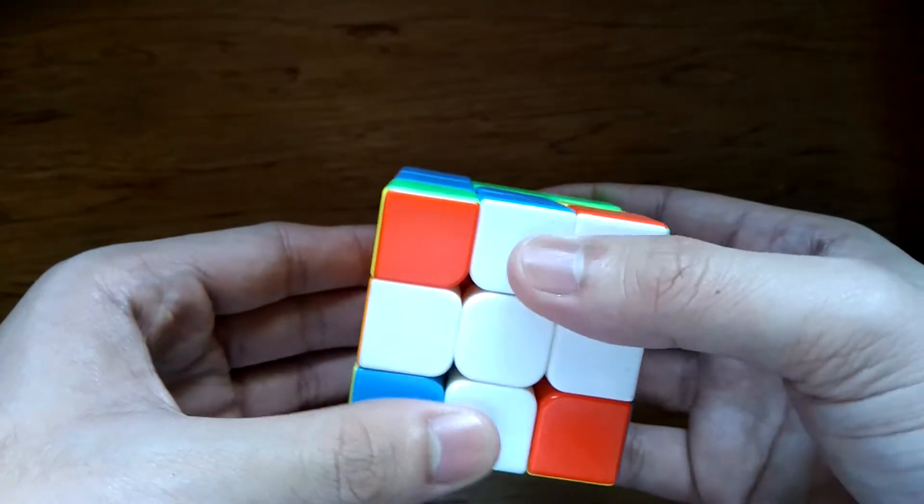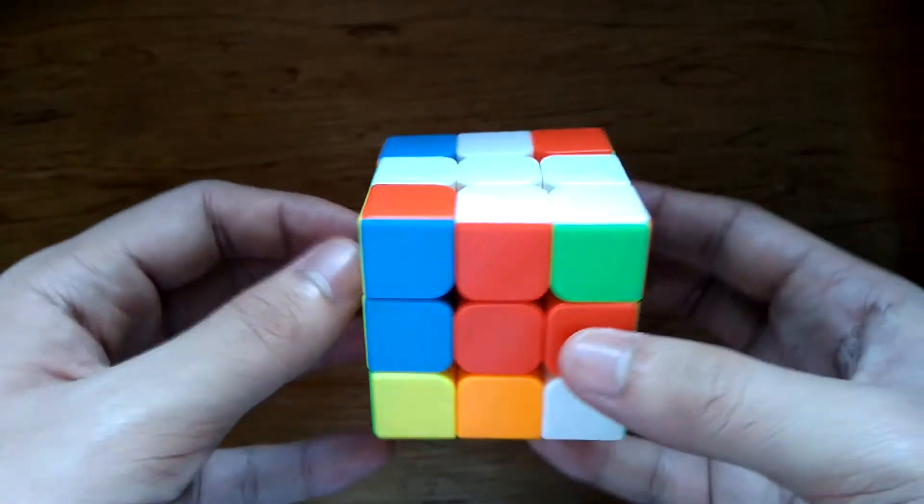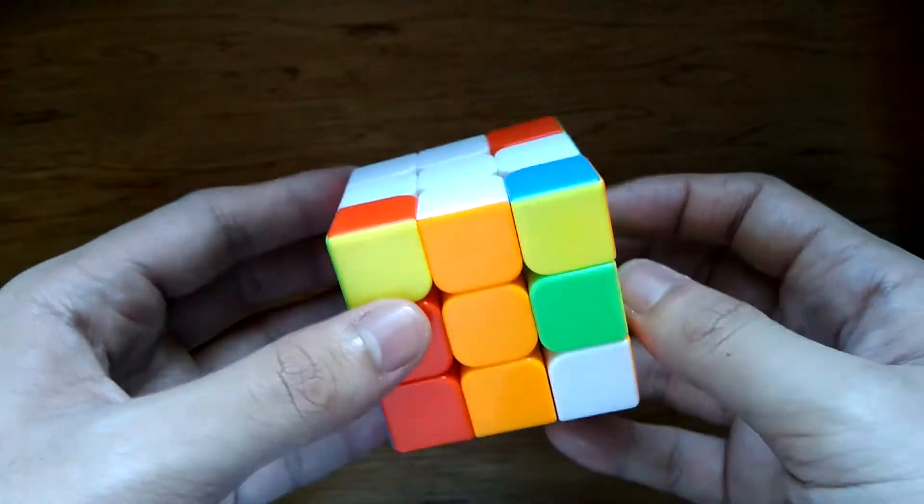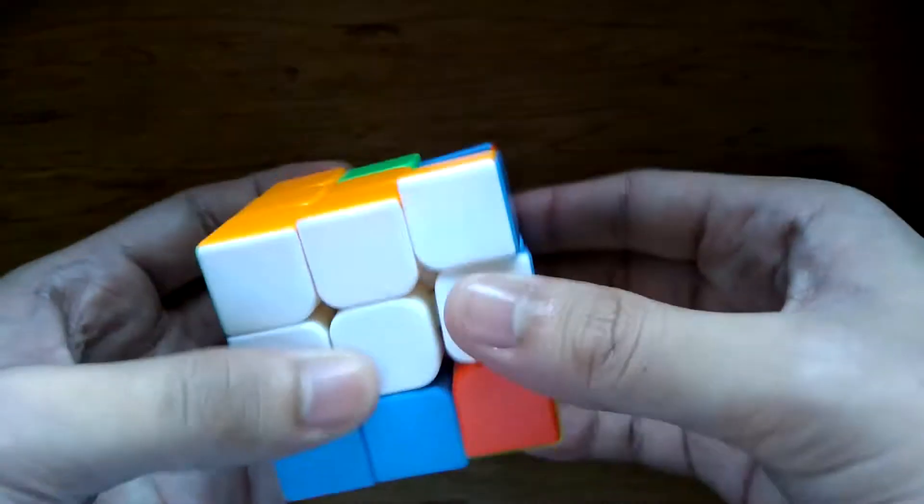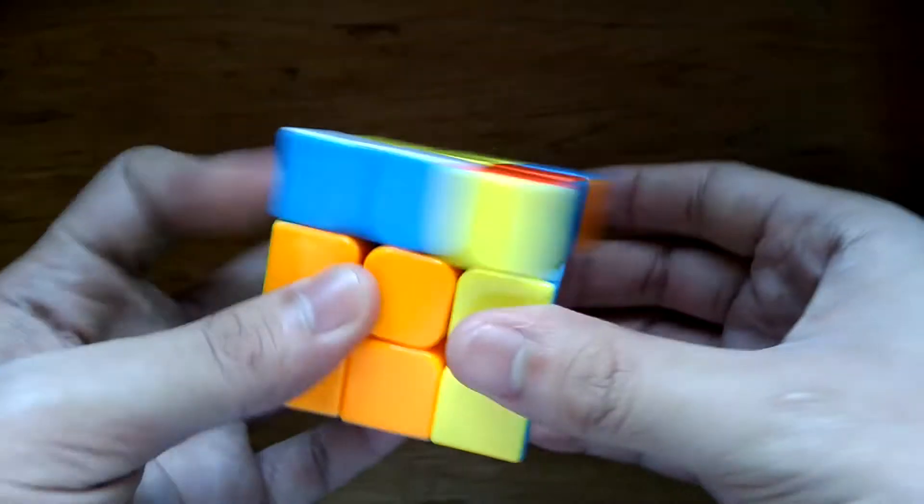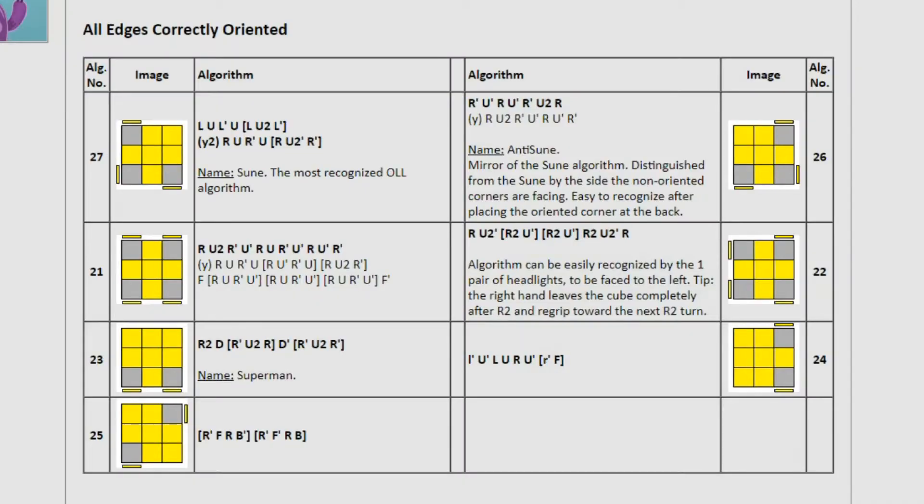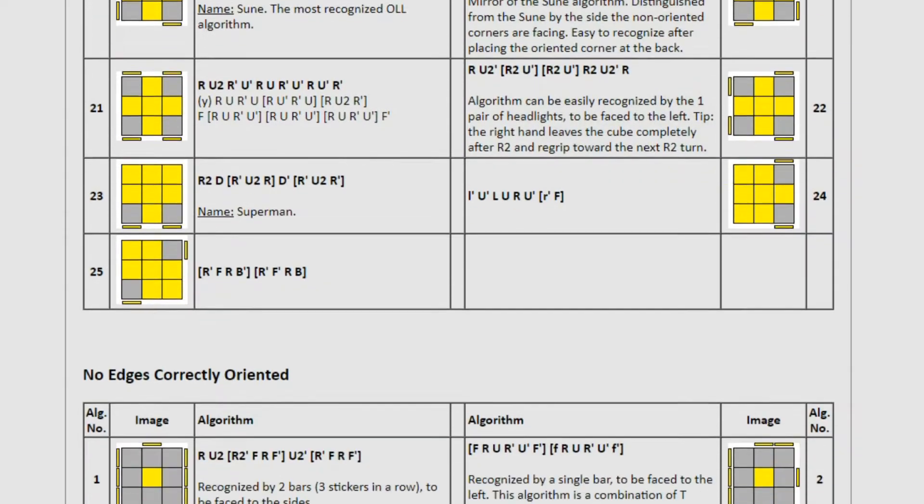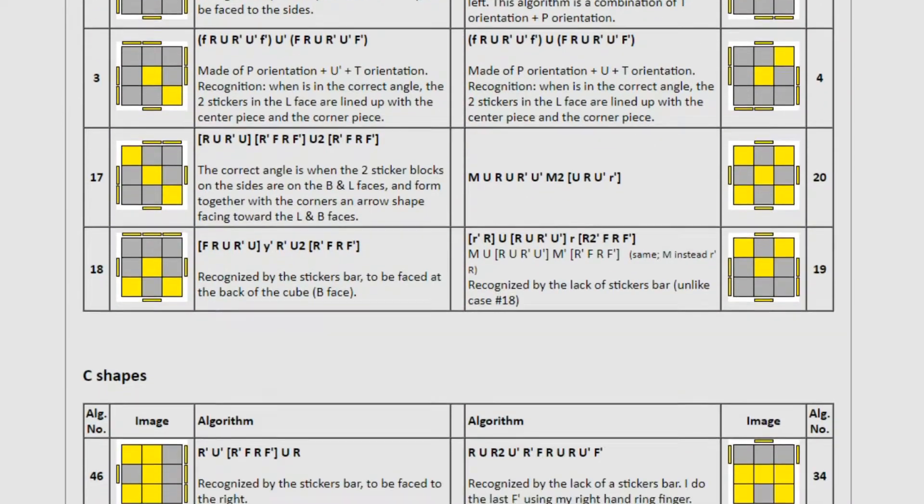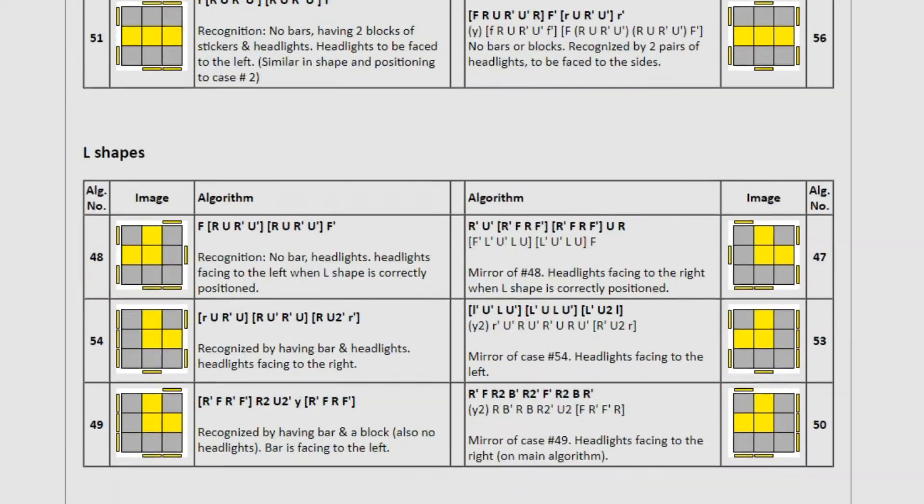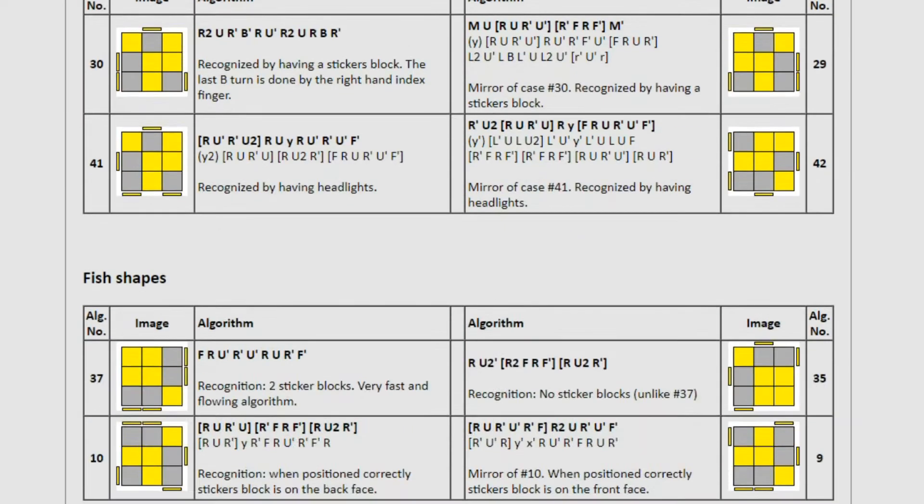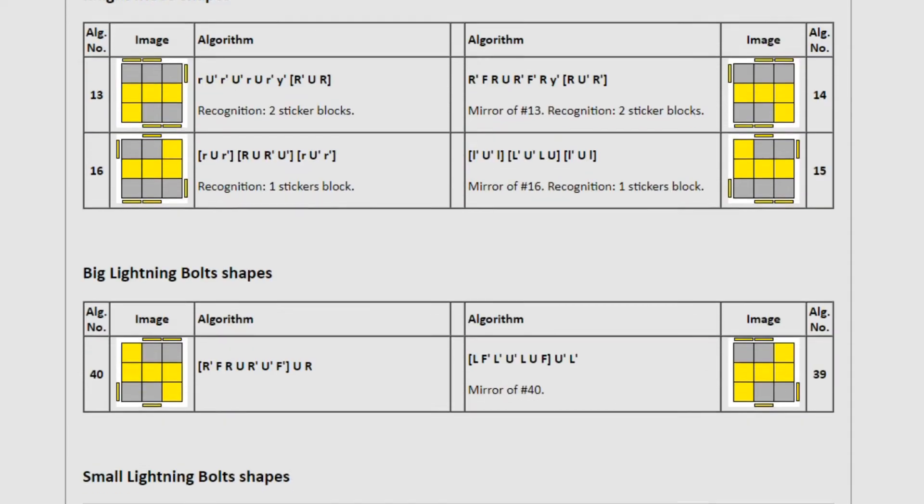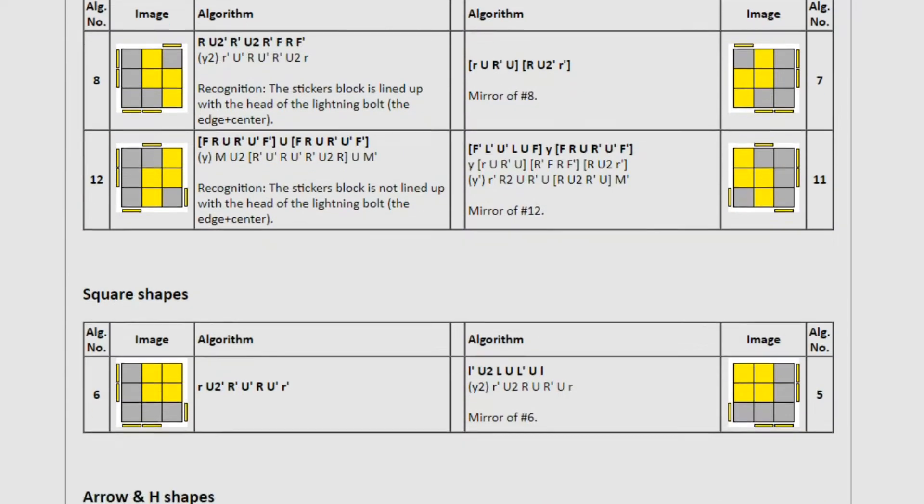The method works on a layer-by-layer system, first solving a cross, typically on the bottom, continuing to solve the first two layers, orienting the last layer, and finally permuting the last layer. Fridrich's main contribution to the method was developing the OLL and PLL algorithms, which together allowed any last layer position to be solved with two algorithms and was significantly faster than previous last layer systems.